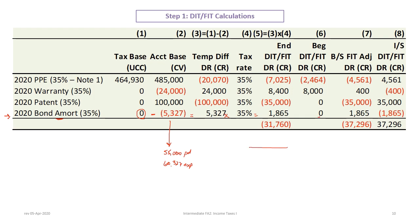The beginning balance on the bond deferred income tax account is zero and the ending balance is $1,865, so we need an adjustment of $1,865: a debit to the deferred income tax for the bond and a credit to the income statement. When all is said and done, on the balance sheet combined we have a net $31,760 income tax liability. The journal entry will be for $37,296 — that's how the deferred tax asset and liability come together line by line.